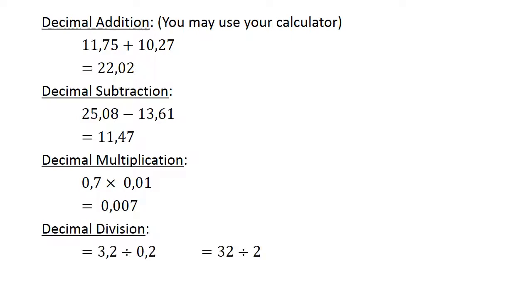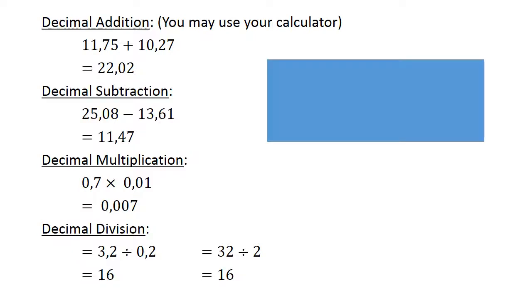Decimal division. 3.2 divided by 0.2. Multiply both with 10 to get whole numbers. 32 divided by 2 equals 16.